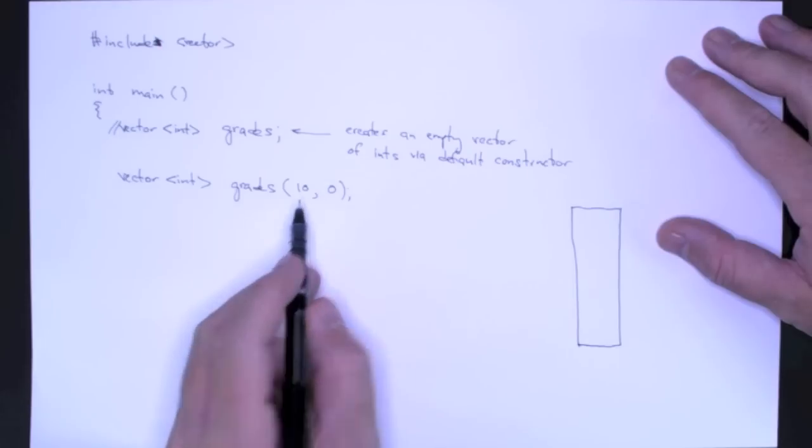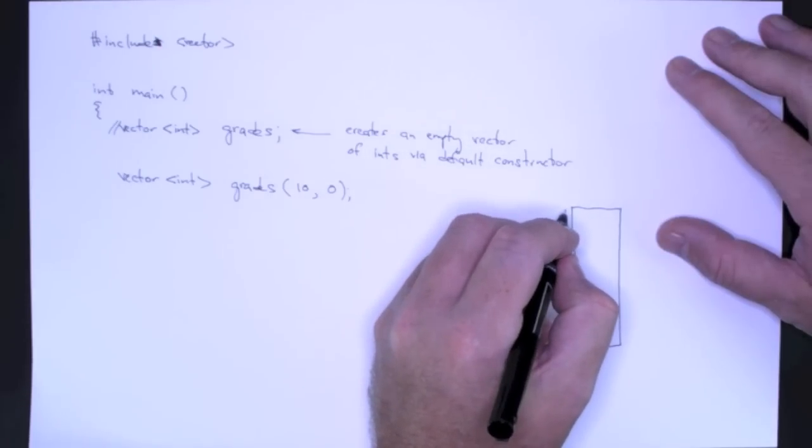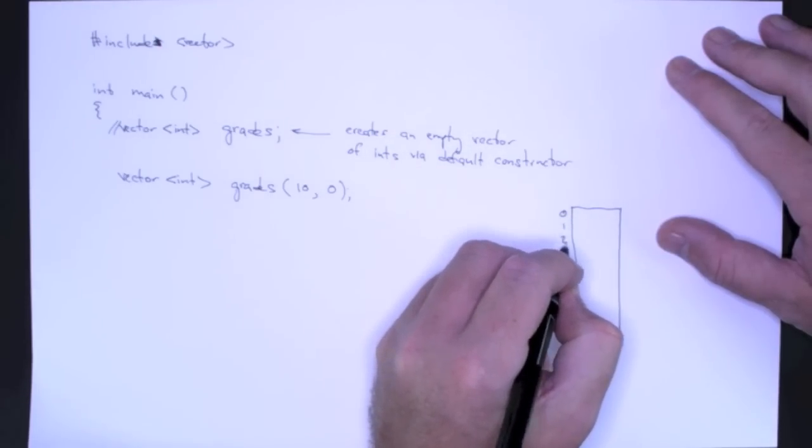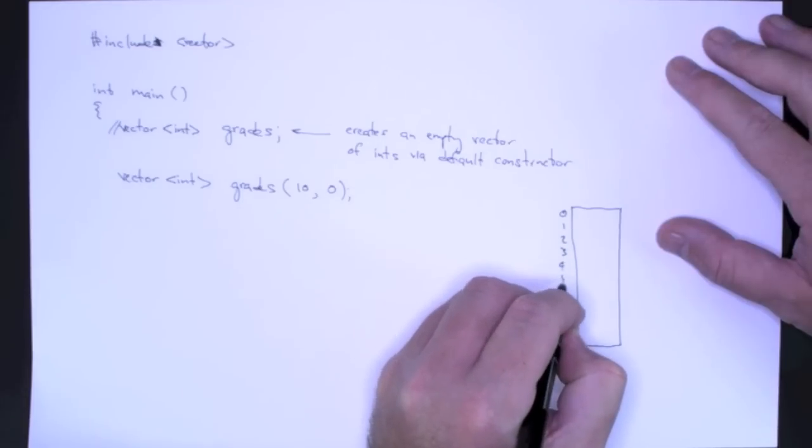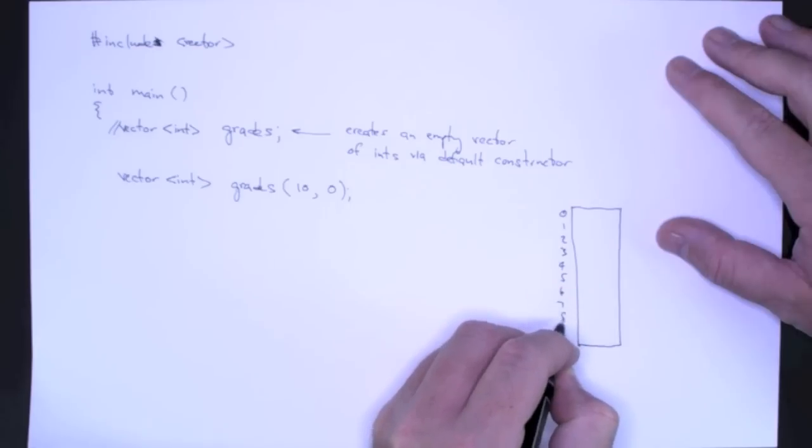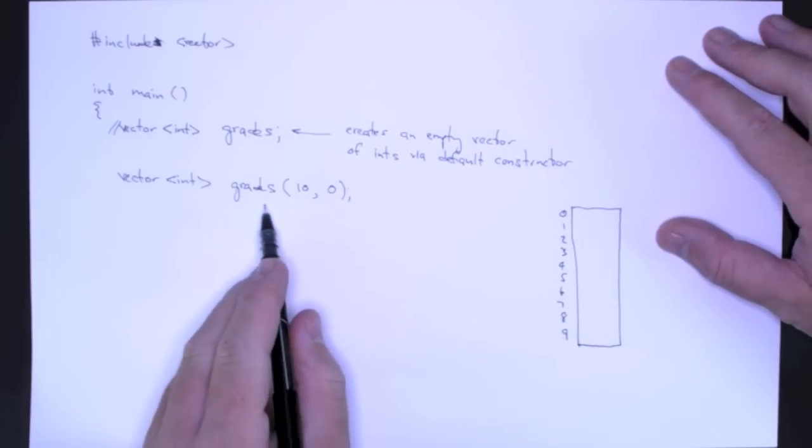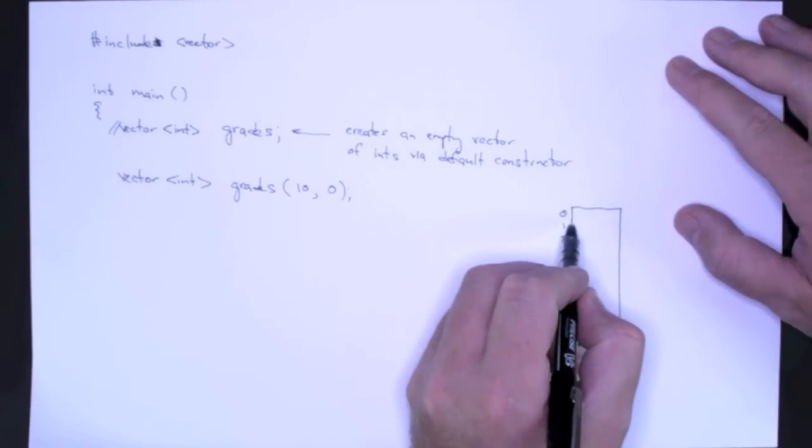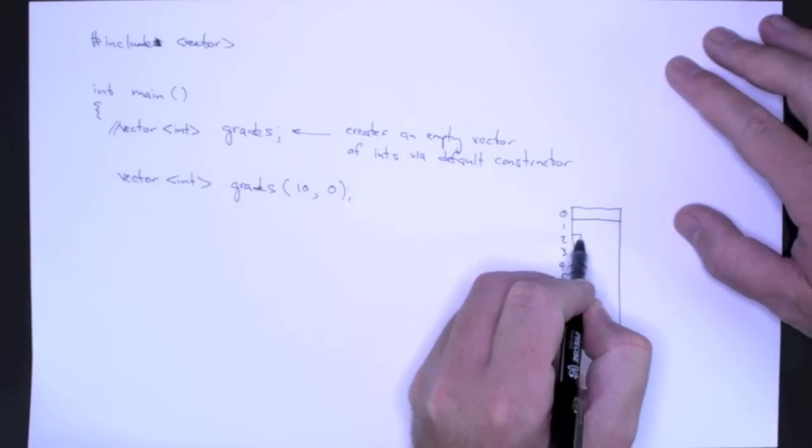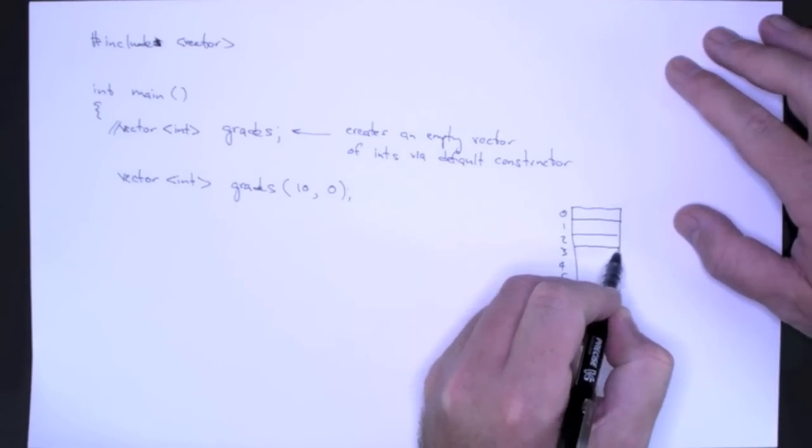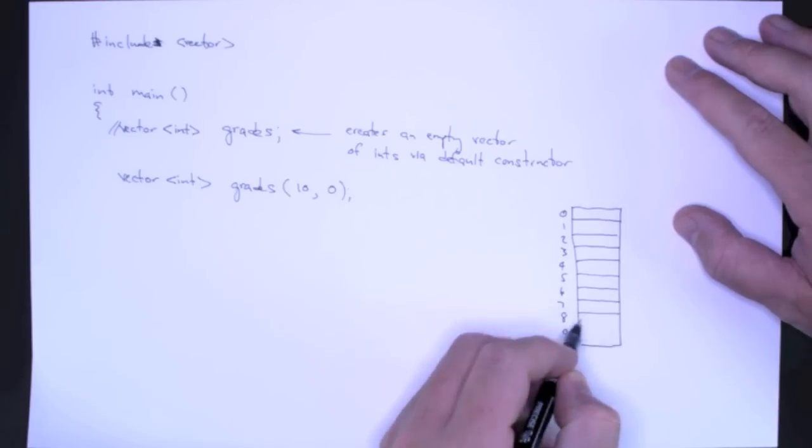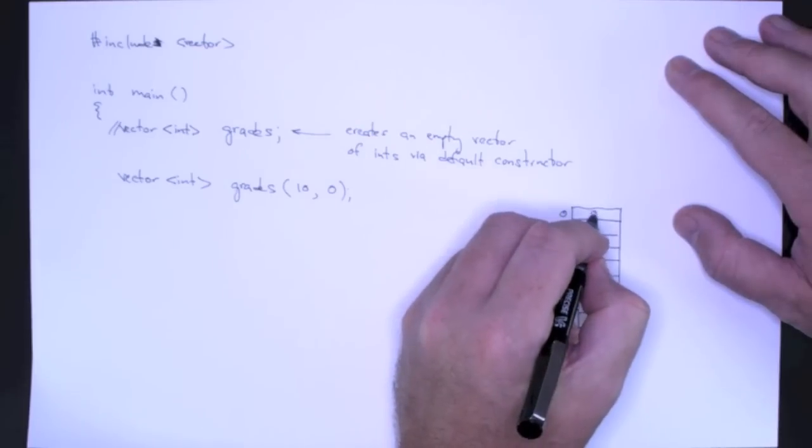with the elements 0 through 9, 2, 3, 4, 5, 6, 7, 8, 9, and that gives us 10 elements. And each element is given or is initialized with the value 0, just like this.